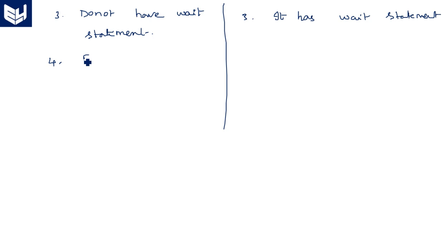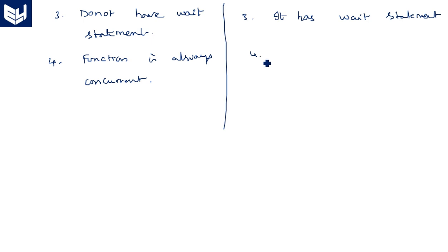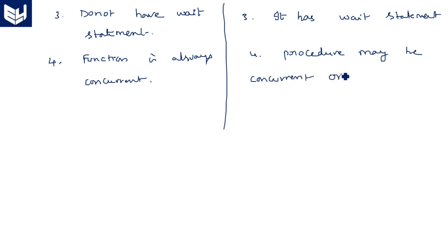Fourth difference: a function is always concurrent, whereas a procedure may be concurrent or sequential.